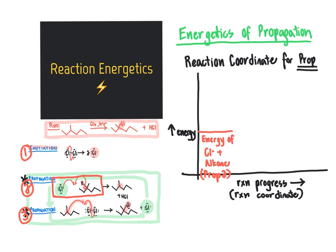We're looking at the energy of the chlorine radical and the alkane as the reactants going into that propagation step. In order for those reactants to become the intermediates that result from that step, an energy barrier will always have to be overcome. Even if the overall energetics of a particular reaction step are favorable — going from high-energy reactants to low-energy products — there's always going to be an energy barrier involved in making and breaking the bonds. So we draw in an energy barrier as a spike or mountain in this plot.